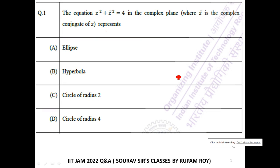The question is: the equation z squared plus z bar squared equals 4 in the complex plane, where z bar is the complex conjugate of z. This equation represents ellipse, hyperbola, or circle of radius 2 or circle of radius 4.